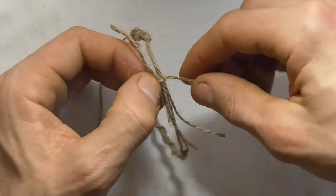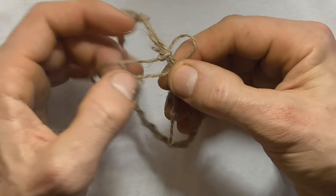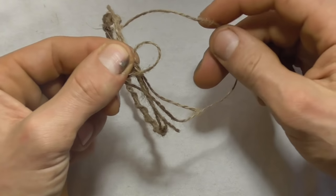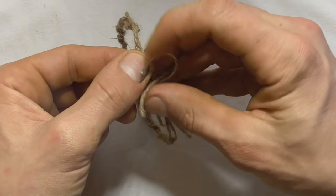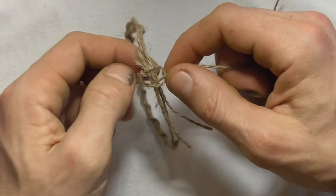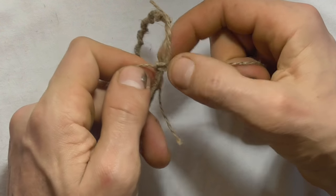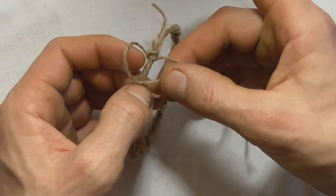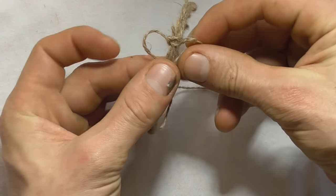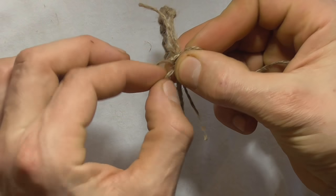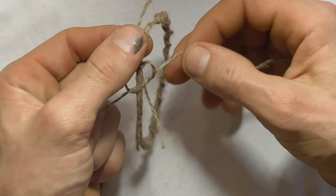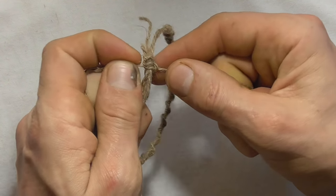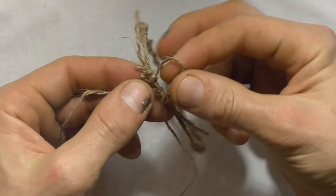Then we're going to continue by making a loop on the right side, over with the left, and then up through that loop. Tighten that down. Then we're going to make the loop on the left hand side, over the right and up behind through that loop. Tighten that down. We just want to keep repeating that procedure until we've done about seven or so knots.